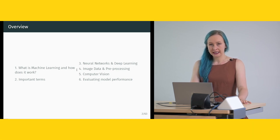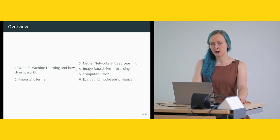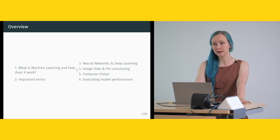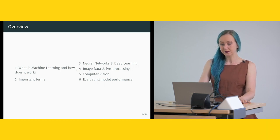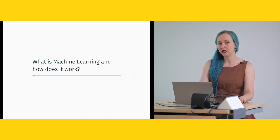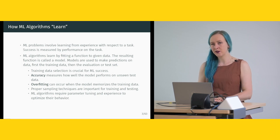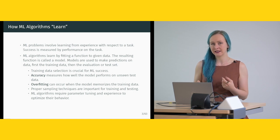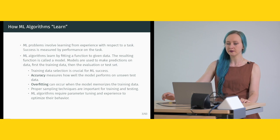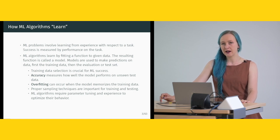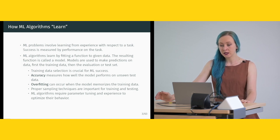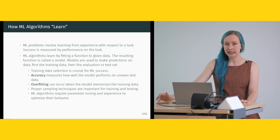We're going to begin with what Machine Learning is and how it works, then look into a few important terms, and quickly move on to Neural Networks and Deep Learning, which is more relevant for what we're doing here. Machine Learning problems involve learning from experience with respect to a task, and success is measured by performance on that task. ML algorithms learn by fitting a function to given data. The resulting function is called a model, used first on training data, then on evaluation or test sets.